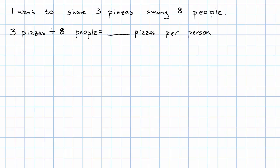3 pizzas divided by 8 people will give us the number of pizzas per person. Looking at this, it's pretty clear that there are not enough pizzas for each person to have one. There are not enough pizzas to just give a pizza to everyone.